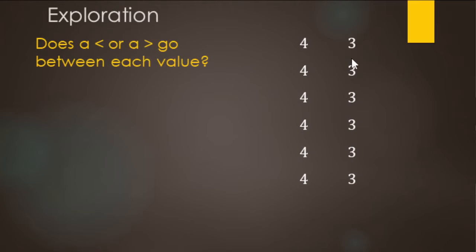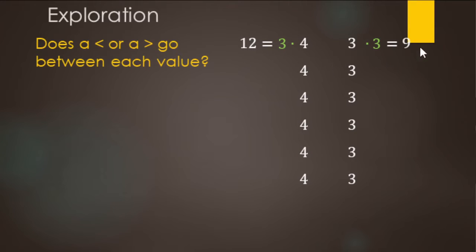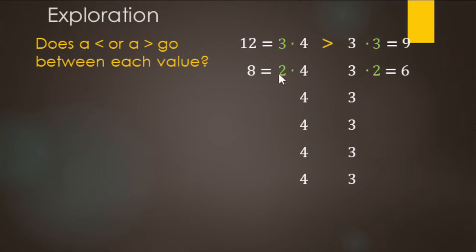Starting with four or three — the four is bigger, so four is greater than three. Remember, the alligator eats the bigger of the two numbers. Now we'll start multiplying. Multiplying both four and three by three gives us 12 and 9 — the left-hand side is still bigger. Multiplying by two gives us 8 and 6 — this side is still bigger. Multiplying by one doesn't change anything: four and three, the left side is still bigger.